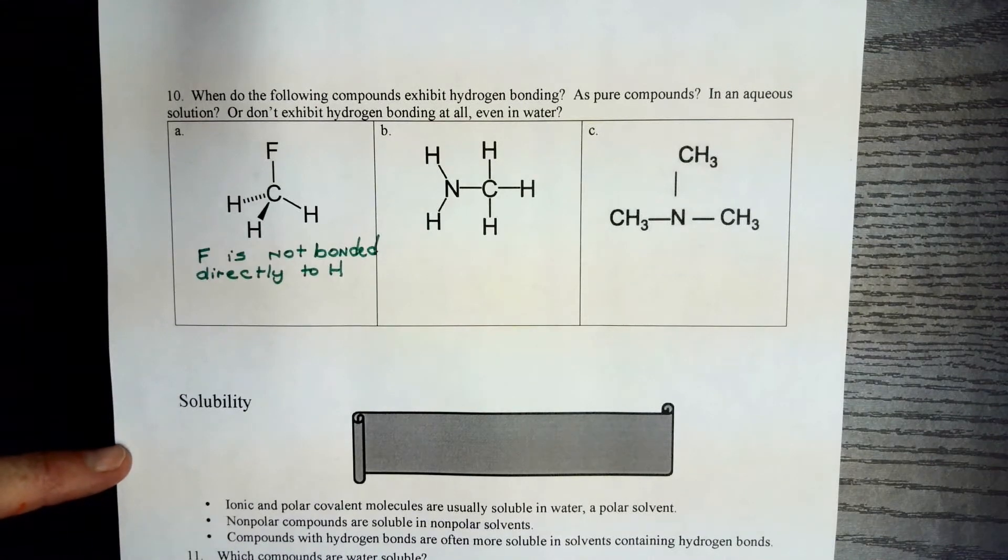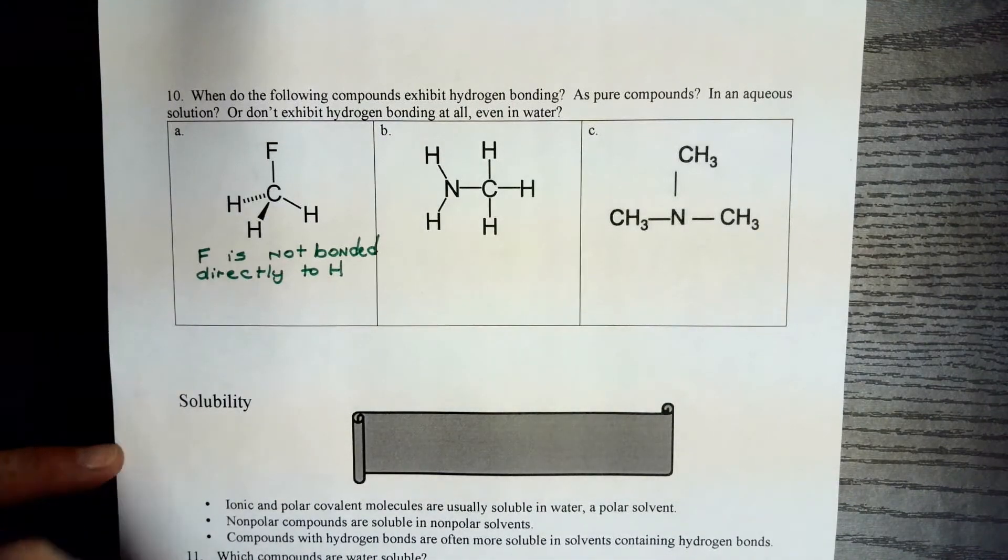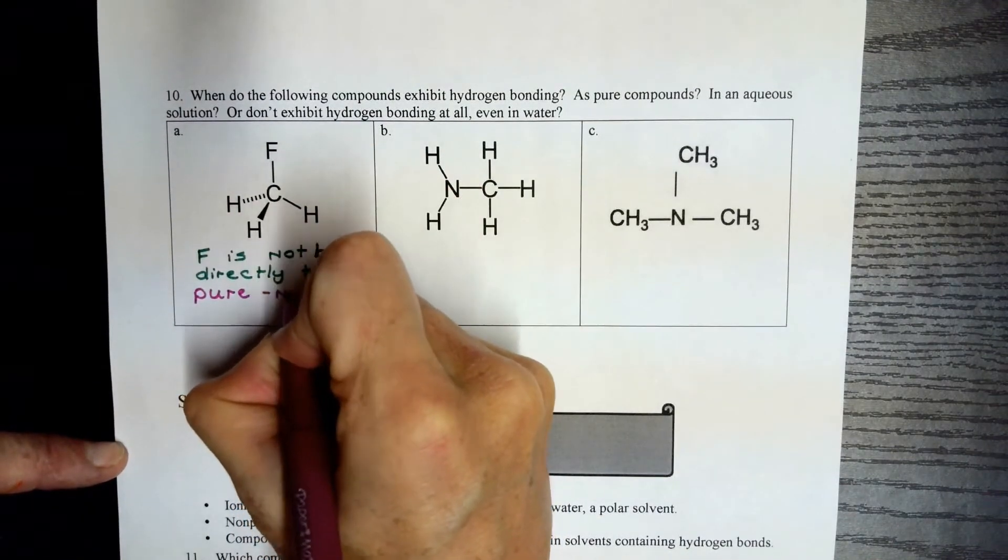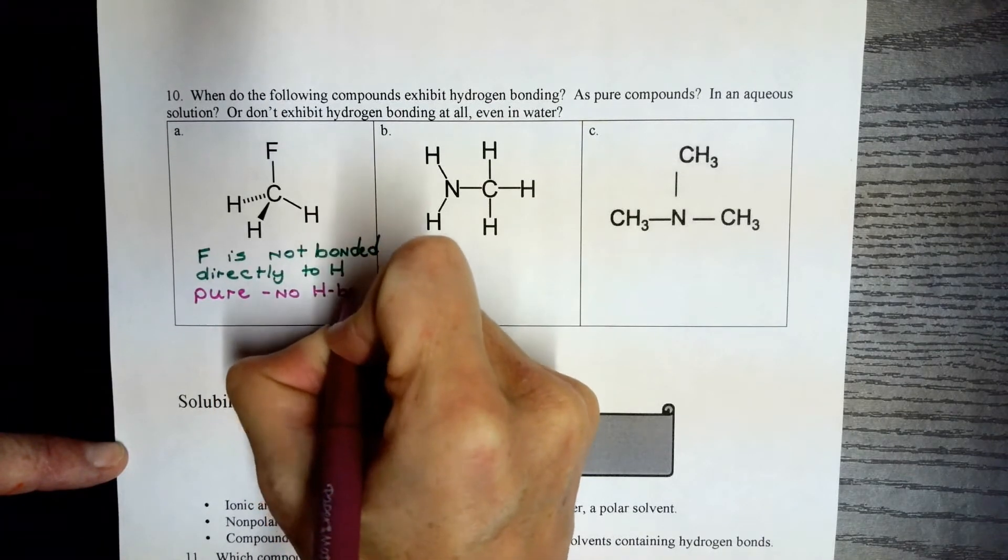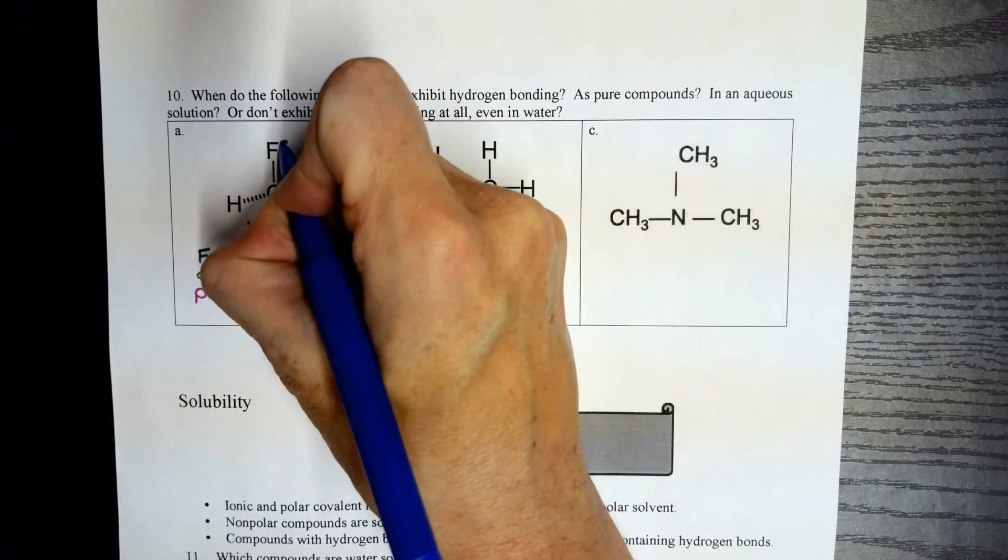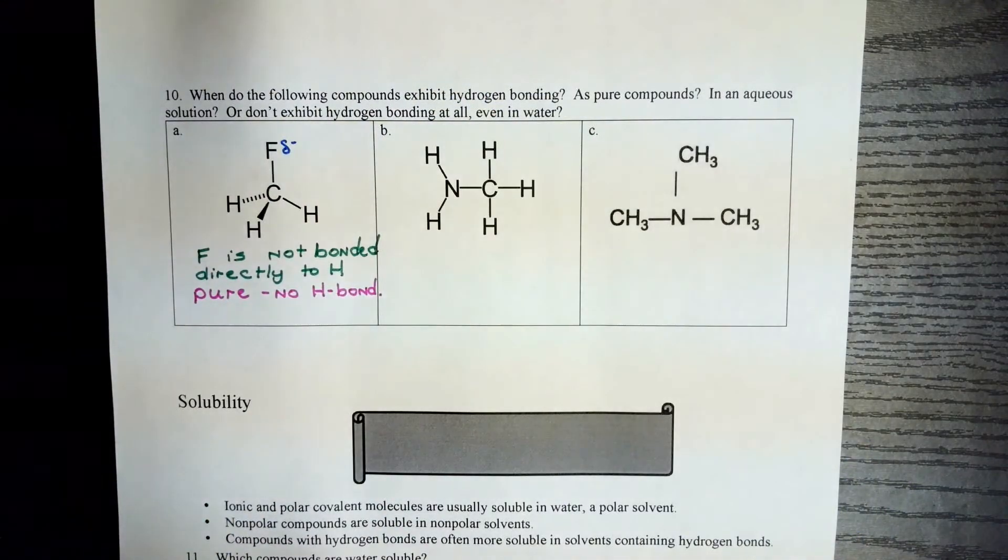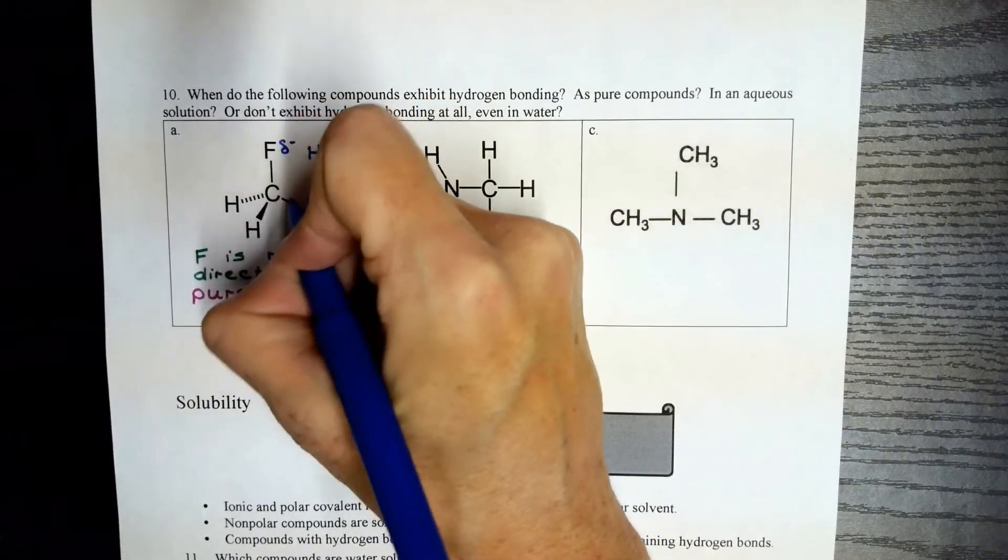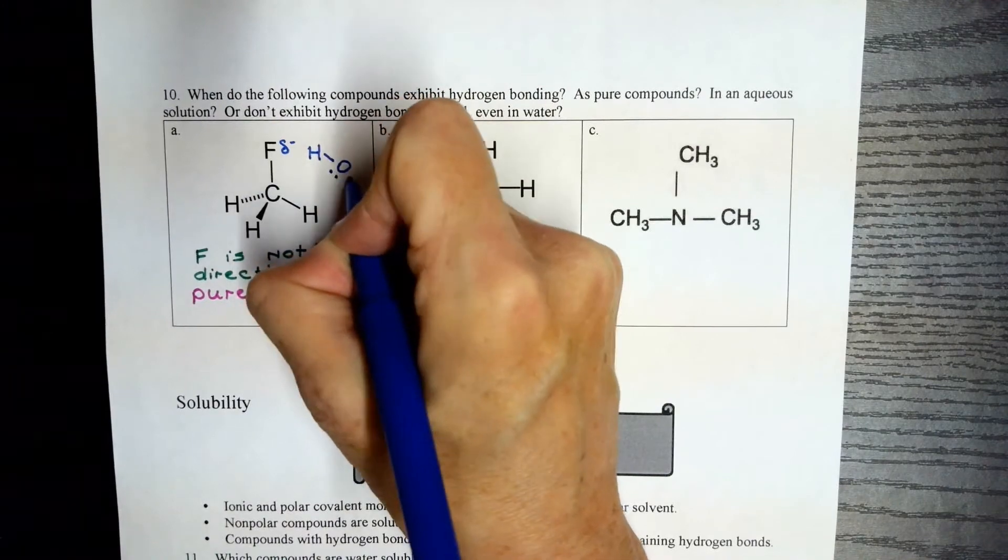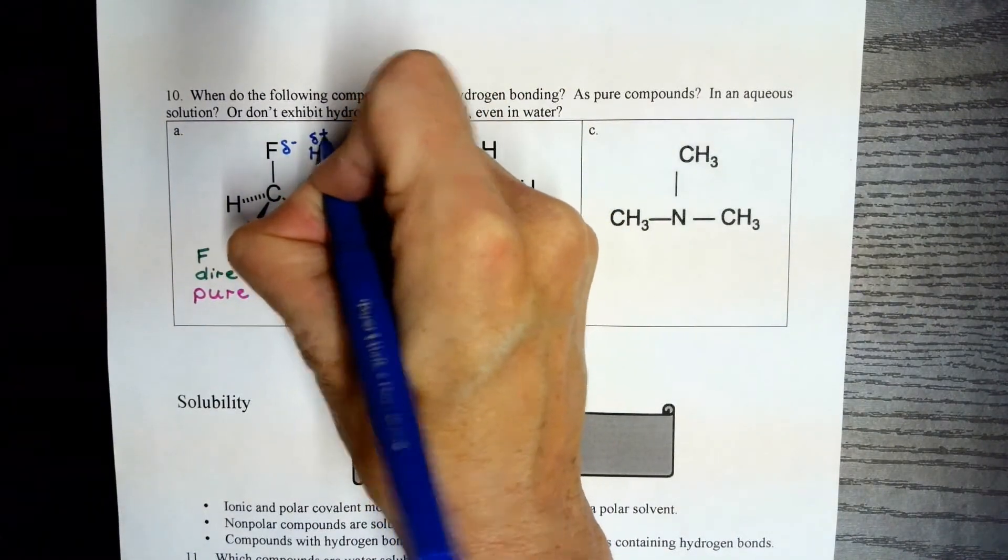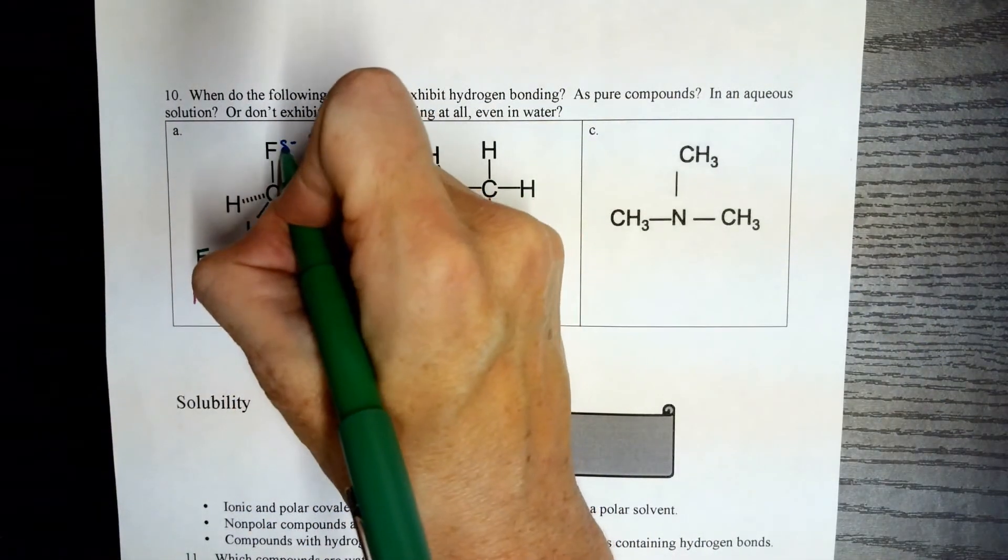In this first example, fluorine is not bonded directly to that hydrogen. So as a pure compound, we're not going to see hydrogen bonding. However, since there is a very electronegative fluorine in this molecule, if we decided to put some water in there, this compound can act as a hydrogen bond acceptor with the water molecule. And I'll use a dashed line to show that intermolecular force.